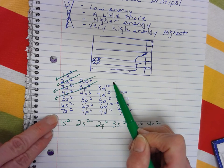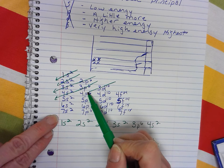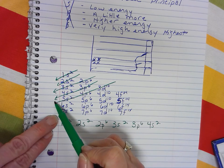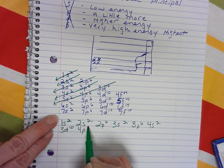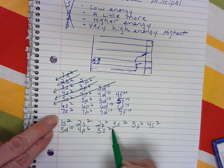So after your 4s2 orbital has been filled, then you'll fill your 3d10, then your 4p6, and then your 5s2.